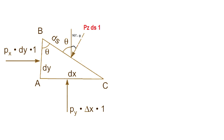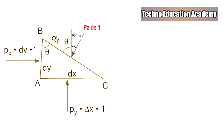Now we resolve the components in the direction of x and in the direction of y. For equilibrium conditions, sigma horizontal equals zero and sigma vertical equals zero, to prove Px equal to Py equal to Pz.